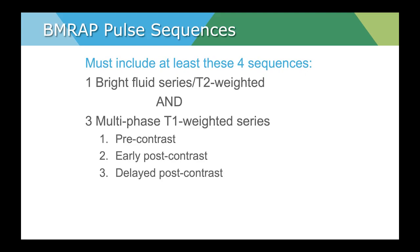The breast MRI protocol must include at least four sequences: a single fluid-sensitive sequence — often a T2, but a STIR can also be used — as well as three multi-phase T1-weighted series: one pre-contrast, one performed in the early phase after contrast administration, and a third performed in the late phase. These are the minimum requirements for any breast MRI, and a breast MRI could be performed with just these four series.